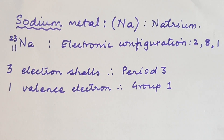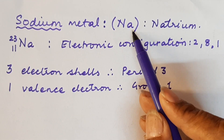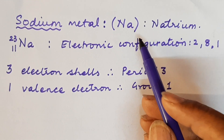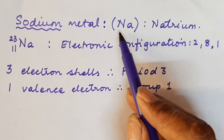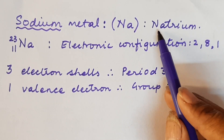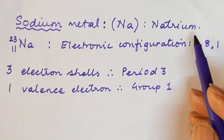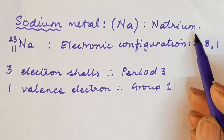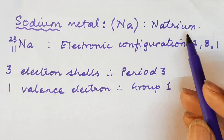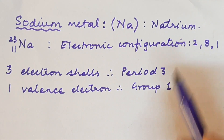Sodium metal has the symbol Na, with N capital and A small. This symbol has come from the word natrium of Latin origin. Earlier, sodium metal was known as natrium.